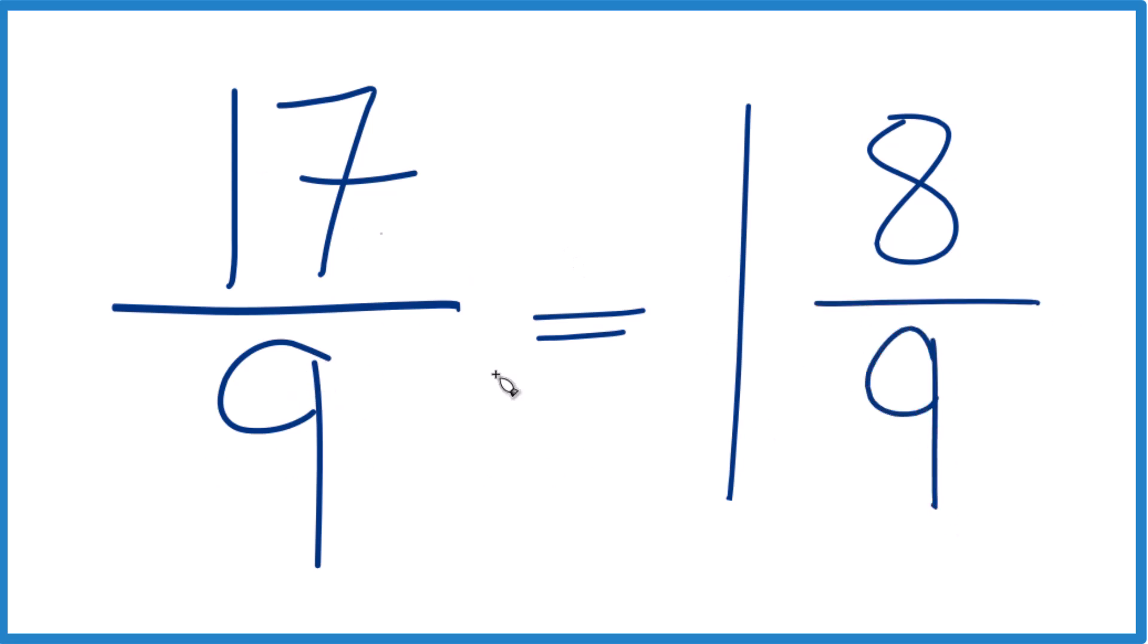So 17 ninths, the fraction, the improper fraction, equals the mixed number 1 and 8 ninths. And we can check that.